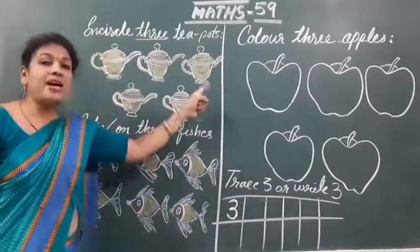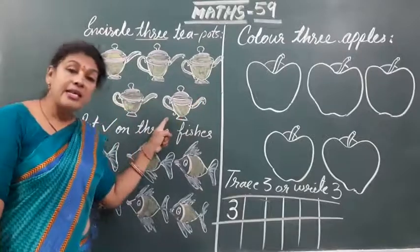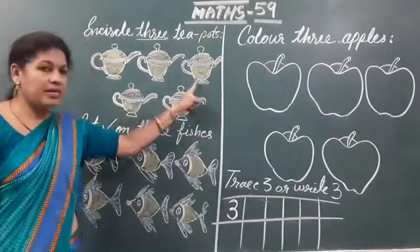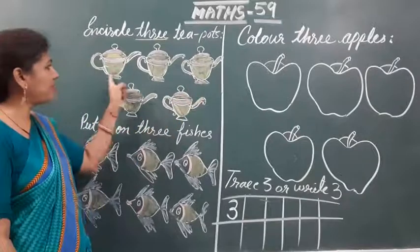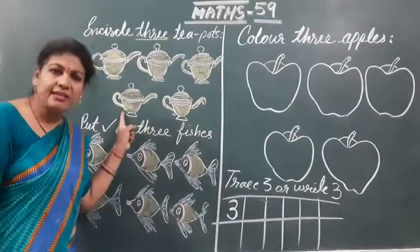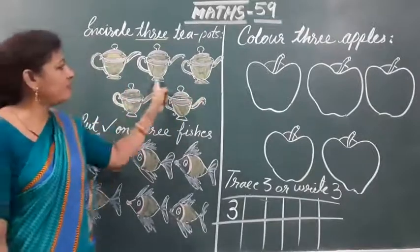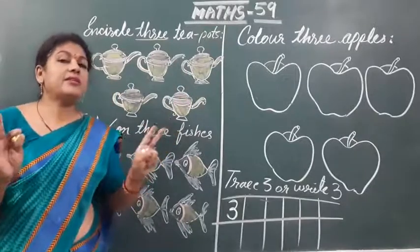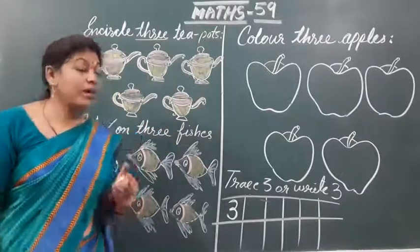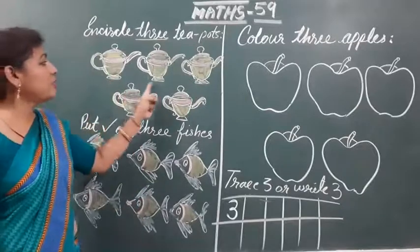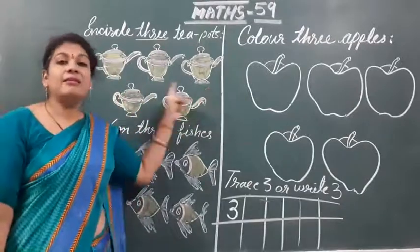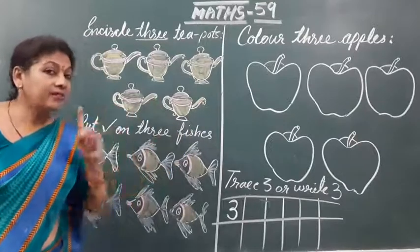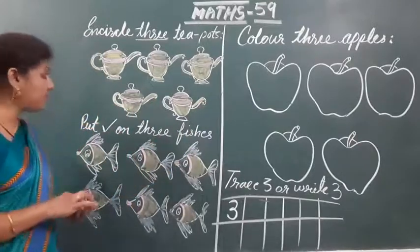Now here are 5 pictures given. Any 3 you can choose: 1, 2, 3. Or 1, 2, 3. Or 1, 2, 3. Any 3 that is your choice. I am taking 1, 2, 3 — this 3 I am taking and encircling the 3 teapots.